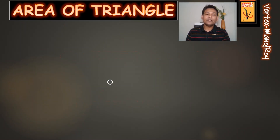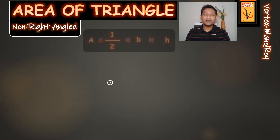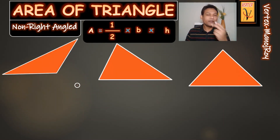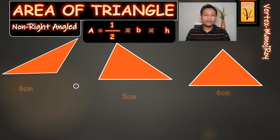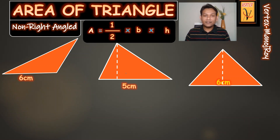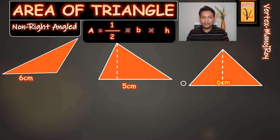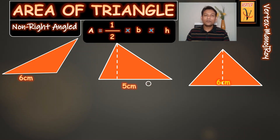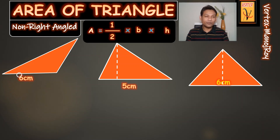Using the same formula to find the area of a non-right angle triangle — let's see. I have used three examples here, with bases of 6 cm, 5 cm, and 6 cm. These are the bases of the non-right angle triangles. What we need is the height. The imaginary perpendicular line from the base to the third vertex is called the height of the triangle.